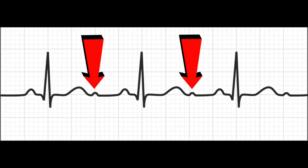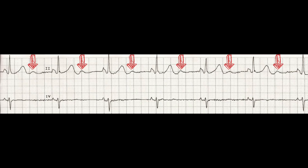Unfortunately, most U-waves are not as obvious as this one, and most strips are not as clean — there's definitely no artifact on this illustration. This is an actual strip, so you can look right after the T-waves, which appear to be quite a bit taller. I've put an arrow on every U-wave — they're slight, but they are definitely present.